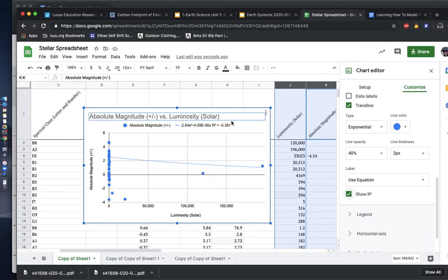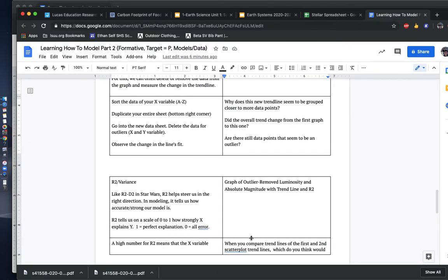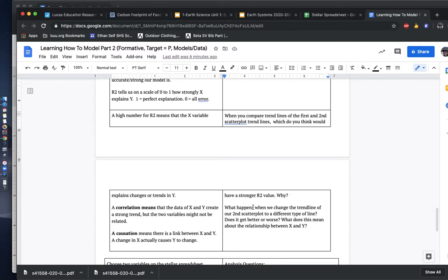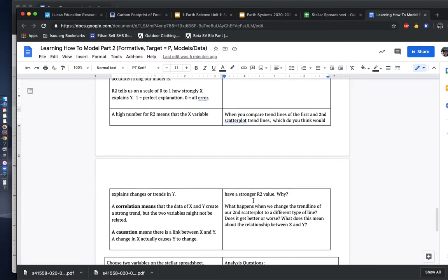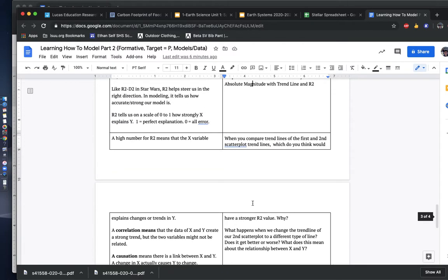Regardless of whether you got a positive or a better change in R2, you're going to want to put that fourth scatter plot right here. And you're going to want to talk about the differences and the strengths and how that might be related to the outliers.